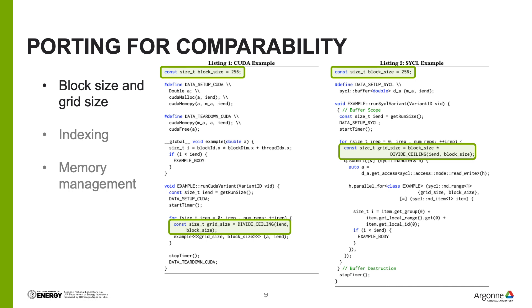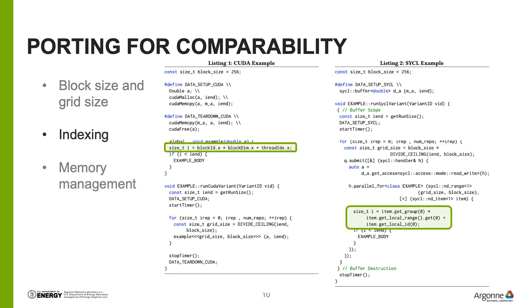Drawing attention to several small details: the block size given is explicit for both our CUDA and SYCL examples to ensure the same execution for both programming models. The sizes passed into the nd_range in SYCL differ from the CUDA implementation, which passes in the number of blocks rather than the overall index space size. In our implementation, we calculate our index using get_group, get_local_range, and get_local_id function calls from the nd_item. This is comparable to calculating the index in CUDA using blockIdx, blockDim, and threadIdx. This verbosity could be avoided by simply using get_global_id.